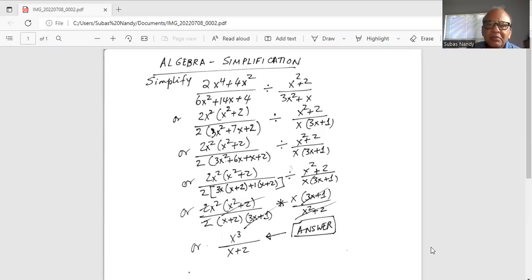So from the numerator of the first expression, we will take 2x square outside the parenthesis, we will be left with x square plus 2 inside the parenthesis.